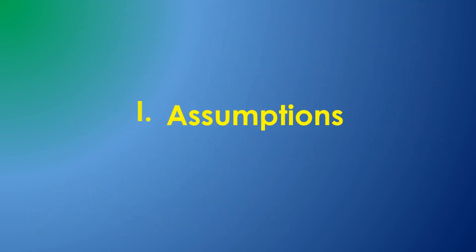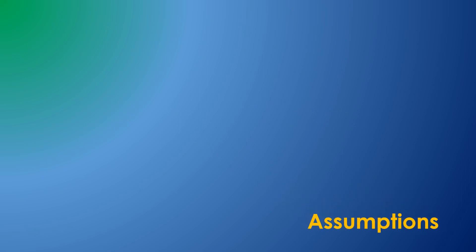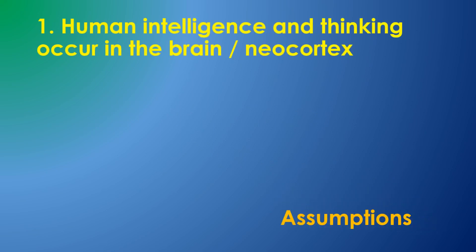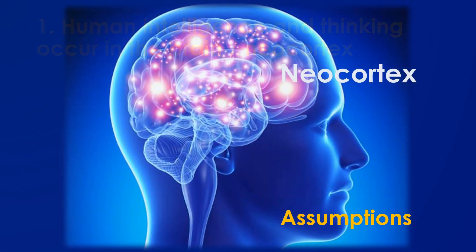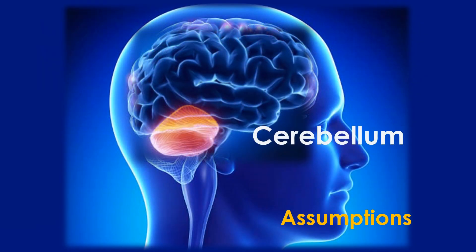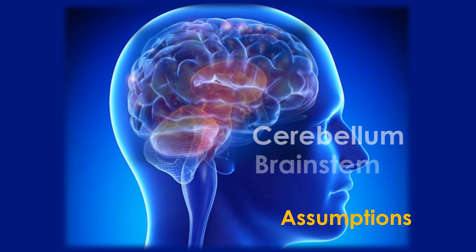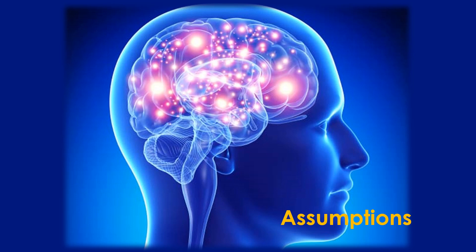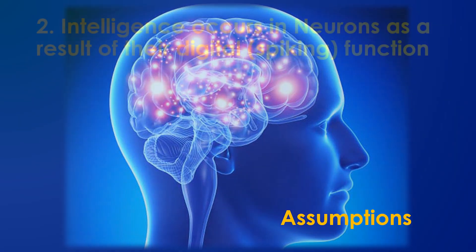So what are my simplifying assumptions and their impact? I assume that intelligence occurs in the brain and primarily in the neocortex. While other areas of the brain play a part, they are primarily busy maintaining your body and their contribution to intelligence, while perhaps important, represents a small part of the AGI project. If this assumption is incorrect, AGI becomes a bigger project.